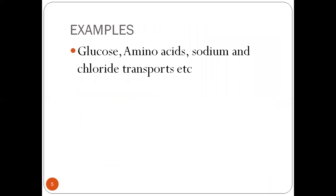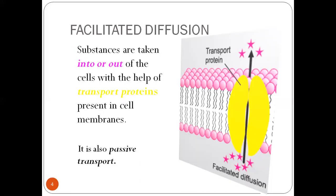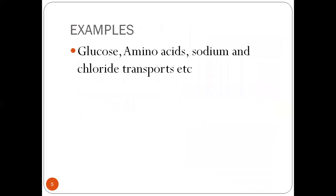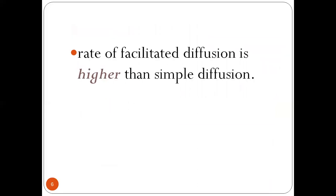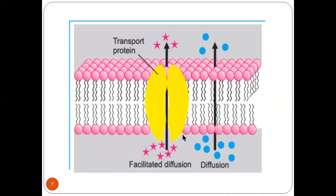For example, glucose, amino acids, sodium and chloride. For the diffusion, they need to be facilitated by the transport protein. For both of them, facilitated diffusion and diffusion are under the passive transport. This is combined in the facilitated diffusion. The molecules move to the side and from outside.